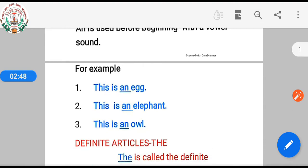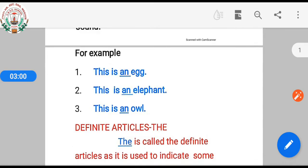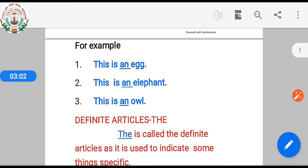Egg - we hear a vowel sound. Elephant 'e' - we hear a vowel sound. Owl - we hear a vowel sound. So we have to use 'an' here.